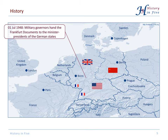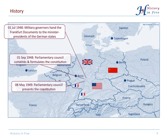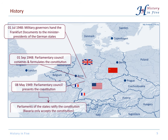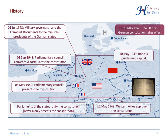The military governors handed over the Frankfurt Documents to the minister presidents — the Frankfurt Documents stating the ideas of the Western Allies for a constitution of a German state. So the Parliamentary Council convened, formulated a constitution, and came up with a solution on the 8th of May 1949. The German states ratified the constitution, the Allies approved, Bonn was declared capital, and in the night from the 23rd to the 24th of May, the German constitution took effect.